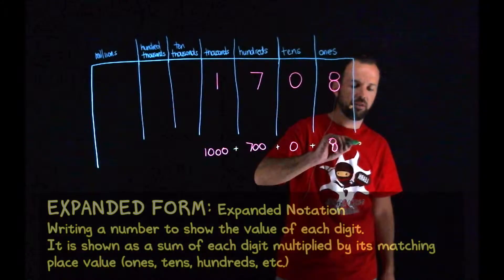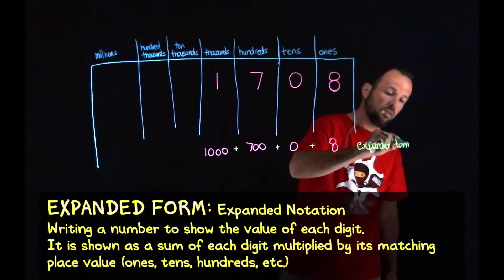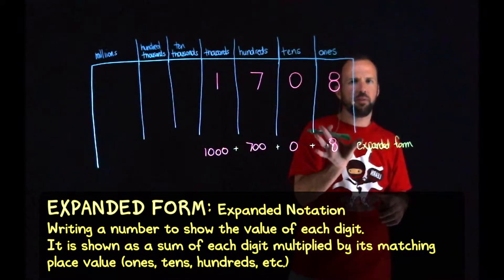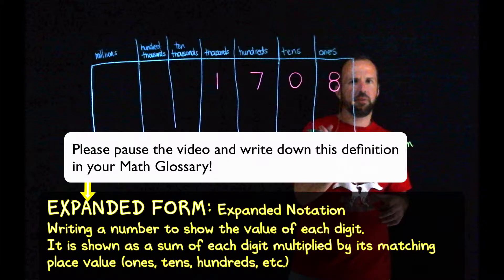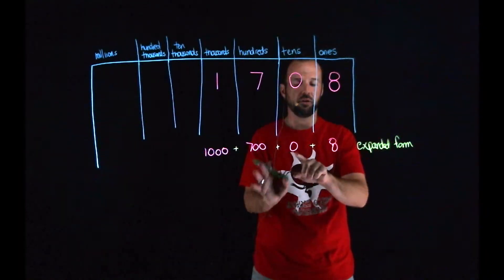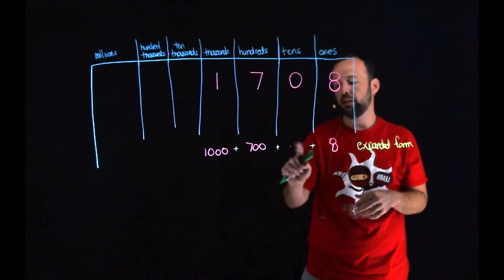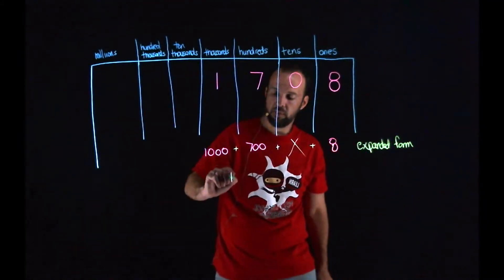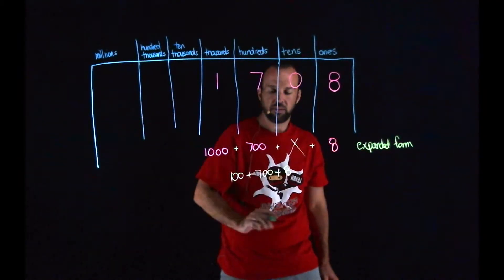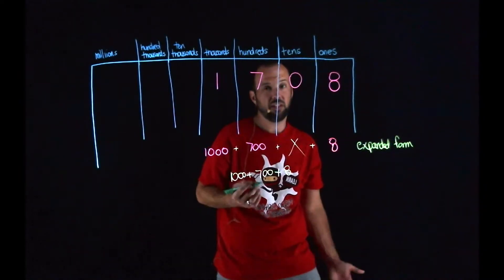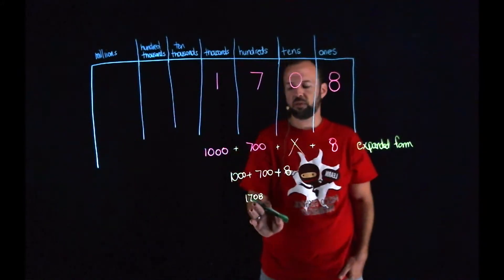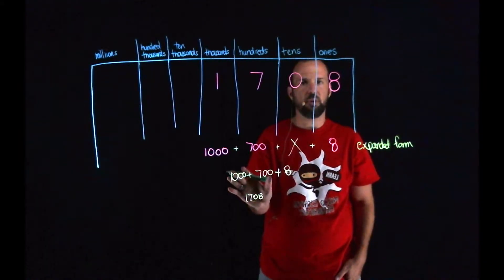So expanded form — that's a new vocabulary term we're working with in this lesson. What that means is we're going to write that number broken apart basically by its place value, by what each digit is worth in that number. Now you can see in this expanded form that I did represent the 0, but most of the time when we're talking expanded form, we're not going to worry about that 0. So we can simply write this as 1,000 plus 700 plus 8. In expanded form, I don't have to put that 0 in there.